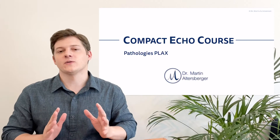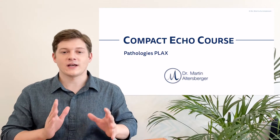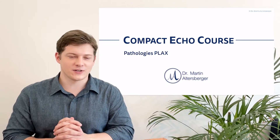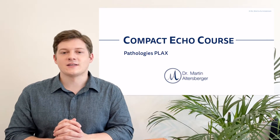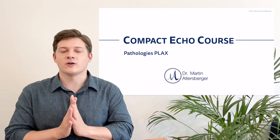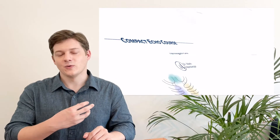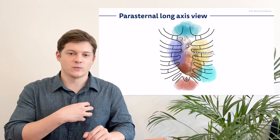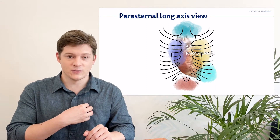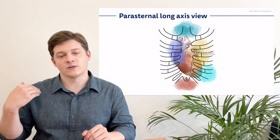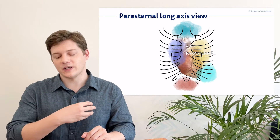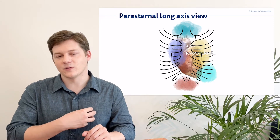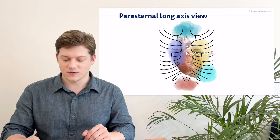In the past few videos, we talked about the normal anatomical findings in a parasternal long axis view in echocardiography. It's time to move on to pathological findings. To review what we have learned, we did talk about parasternal windows, the parasternal long axis view, the marker pointing to the right shoulder of the patient, and you're located on the left side of the sternum — so parasternal long axis view.